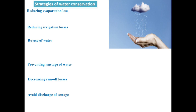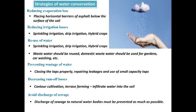Here are six strategies to conserve water. The first one is reducing evaporation loss. In humid regions the rate of evaporation is very high. To reduce evaporation loss, we have to place a horizontal barrier below the surface of the soil so that the rate of evaporation is reduced.